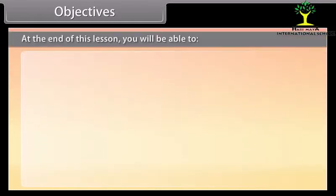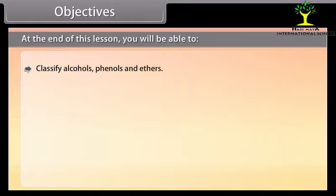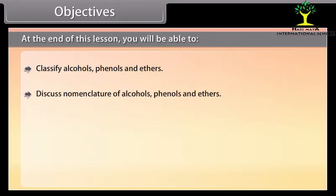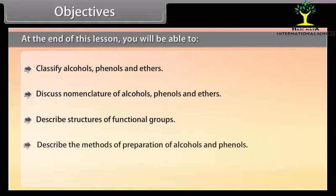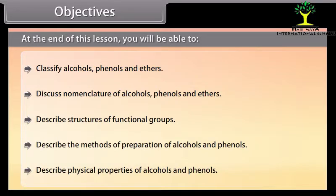Objectives. At the end of this lesson you will be able to classify alcohols, phenols and ethers; discuss nomenclature of alcohols, phenols and ethers; describe structures of functional groups; describe the methods of preparation of alcohols and phenols; and describe physical properties of alcohols and phenols.